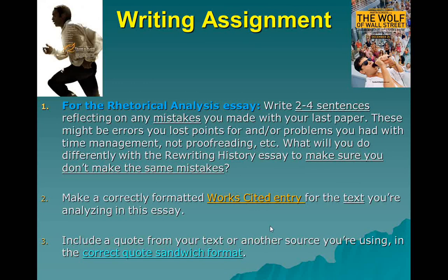If you made an A and didn't have any problems, tell me what you did right that earned you that high grade. Reflect on mistakes you made, and then tell me what you're going to do differently with the rewriting history essay to make sure you don't repeat them. Or if you were happy with your grade, what are you going to do the same? Two to four sentences will be enough, as long as they're very specific. This is not about how much you write — it's about being as specific as possible about what you did wrong, what you did right, and what you'll do for the next paper.